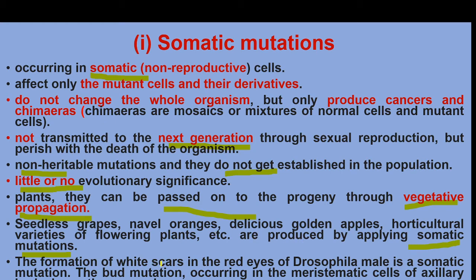The formation of a white scar in the red eye of a Drosophila is an example of a somatic mutation. This is also referred to as a bud mutation.